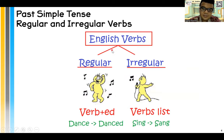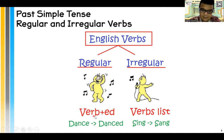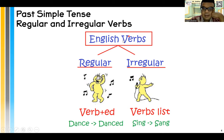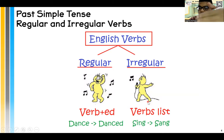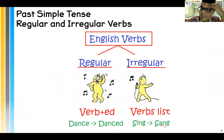English verbs, especially past tense, have two types: regular and irregular. Regular verbs for simple past tense use verb plus -ed. Dance becomes danced. We need to use them more often so that we remember which one to use. For example, the present tense sing — verb one — becomes sang in the past tense.